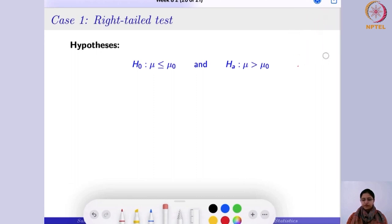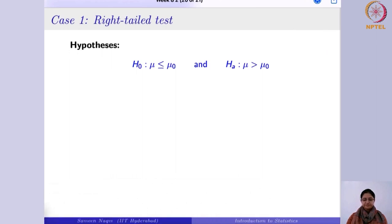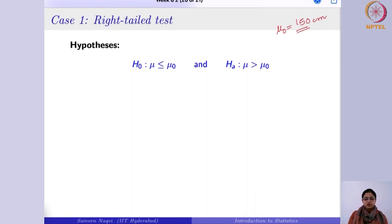We are talking about the right-tailed test. To understand this, consider a simple example. Suppose a person makes a claim that the average height of Indian women is around 150 cm. You want to test whether this claim is correct and frame it as a right-tailed test. Here, 150 is the hypothesized mean under the null hypothesis — that is μ₀. You want to verify whether the average height is actually greater than 150.